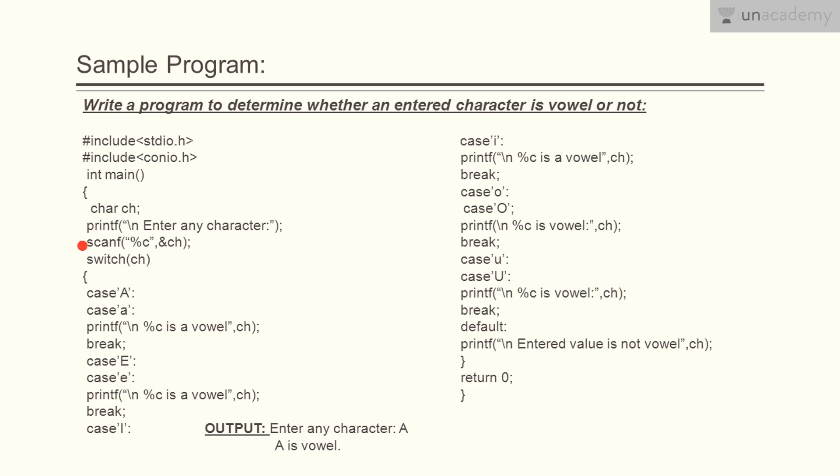As we are dealing with the memory location in which the ch is stored so we have used here ampersand. These integer constant as I told you earlier so switch, the name is here switch ch. In curly braces the case a is here, e here, i here, o and here u.